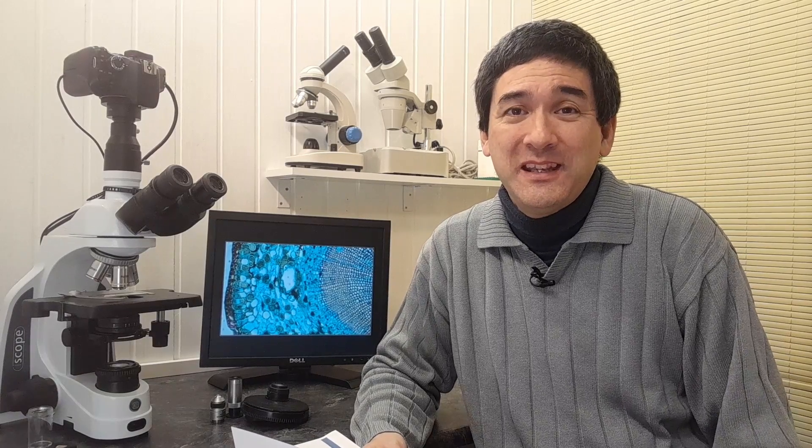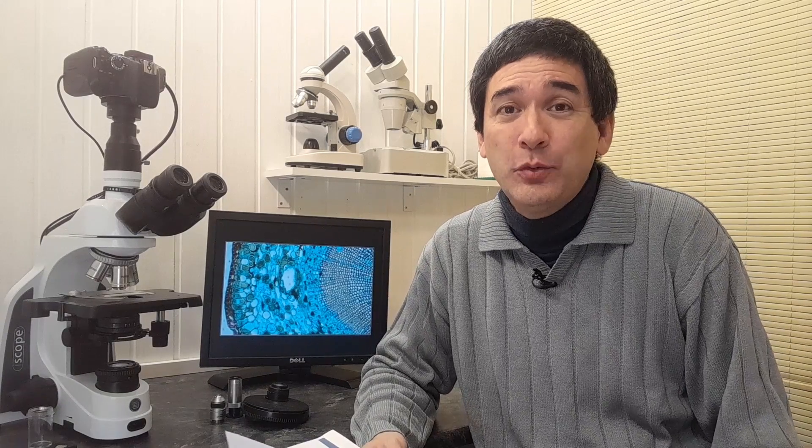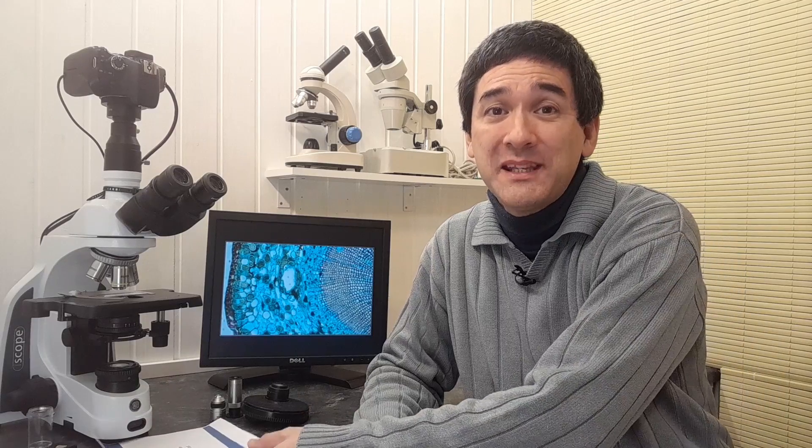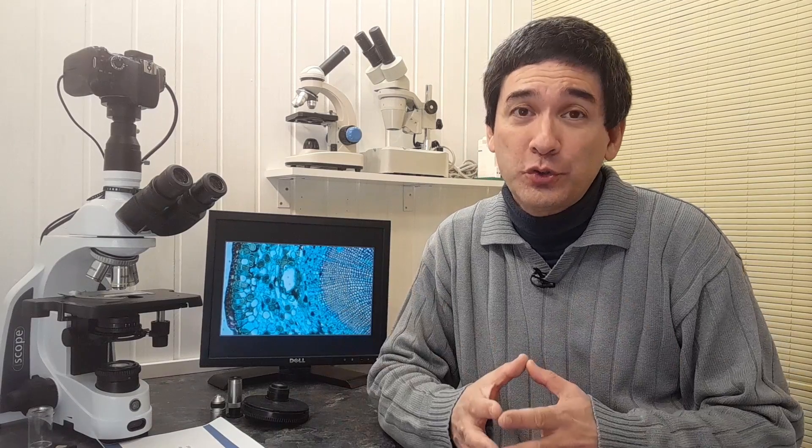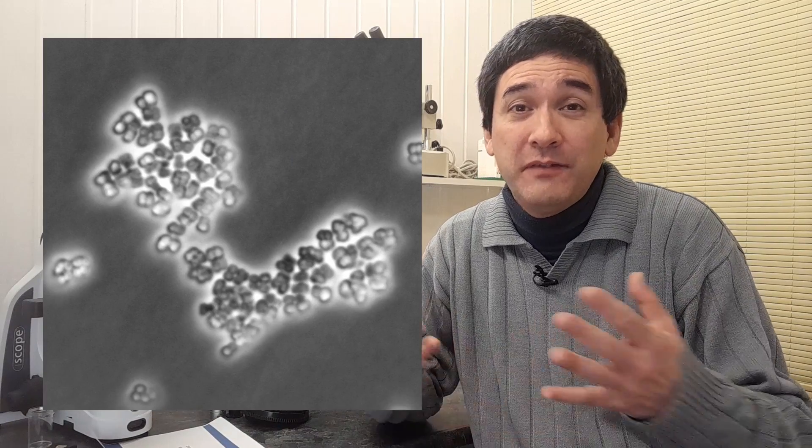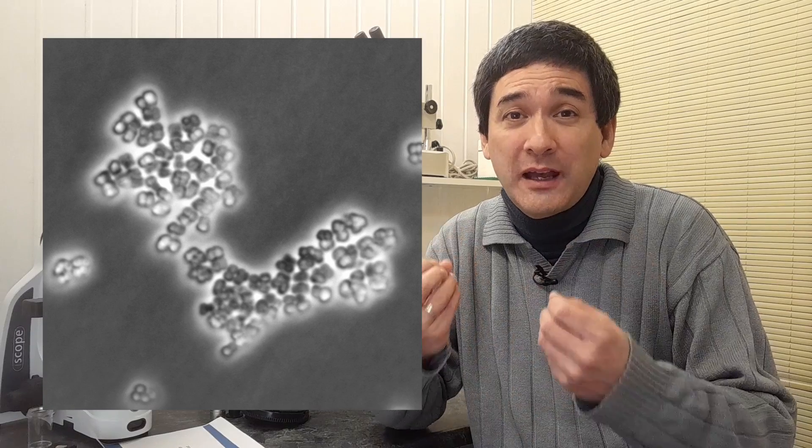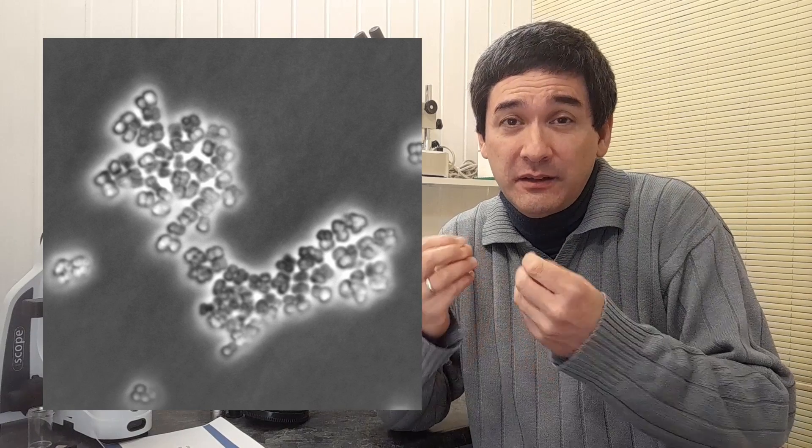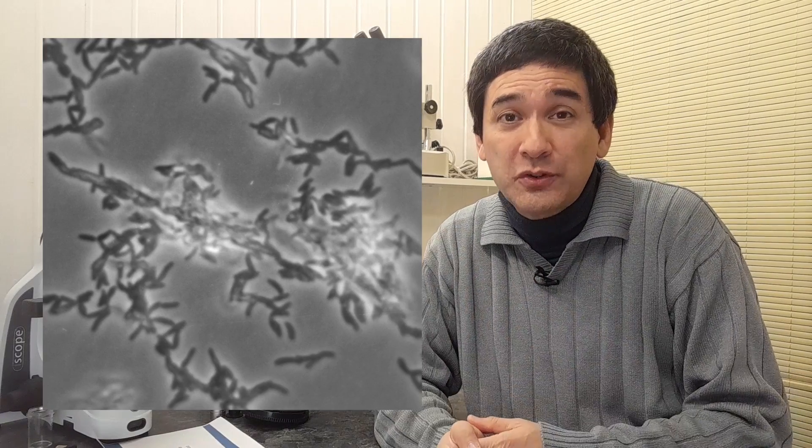Phase contrast microscopy is a slightly more advanced technique which allows you to see specimens that are of very low contrast, for example bacteria, very thin. If they do not have enough pigment, then they're very thin and it can be very difficult to see.